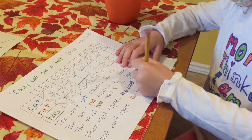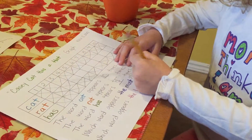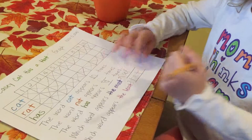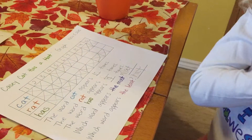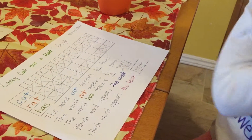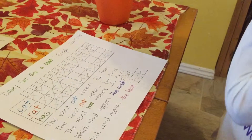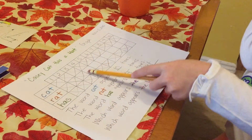Let's see, what word did you write? Rat! And how did you know it appeared the least? Because there's three.